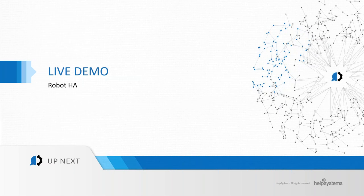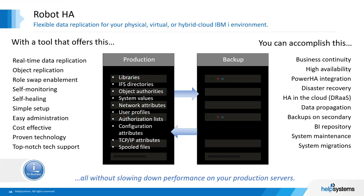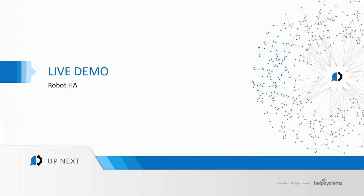Robot HA runs on IBM i, uses remote journaling and local journaling to replicate libraries, and also works in real time with IFS directories. As you add objects into the IFS, they can be replicated in real time through local and remote journaling. I'm going to do a little live demo — as soon as Chuck makes me presenter, I will do that for you.